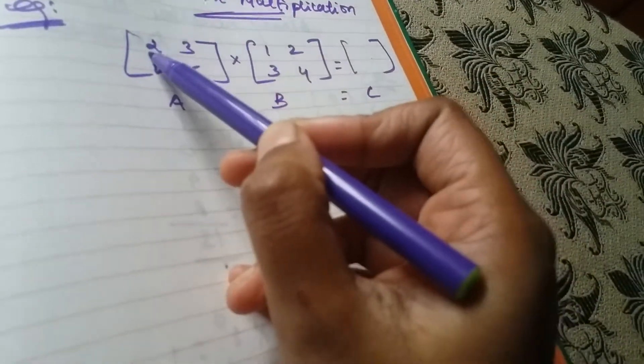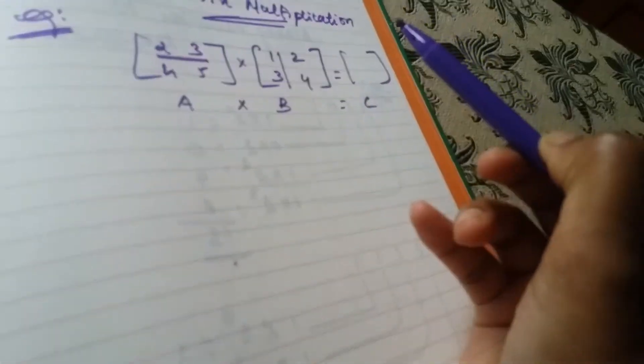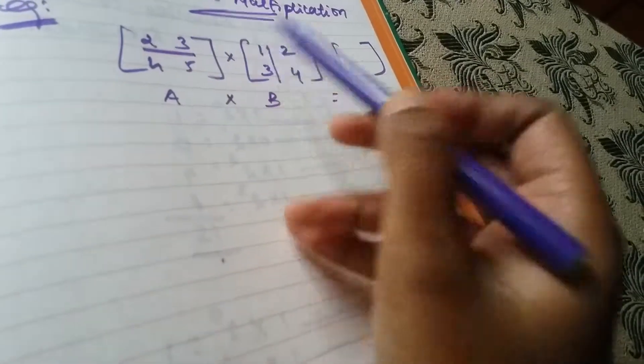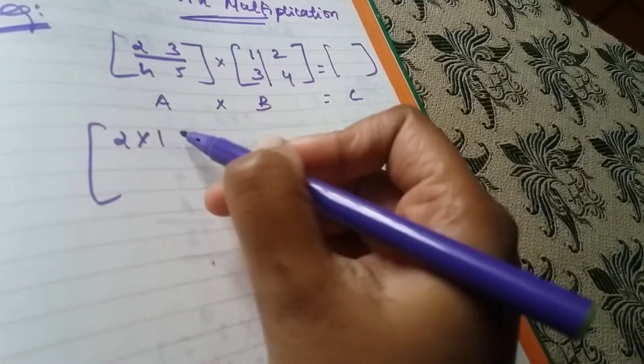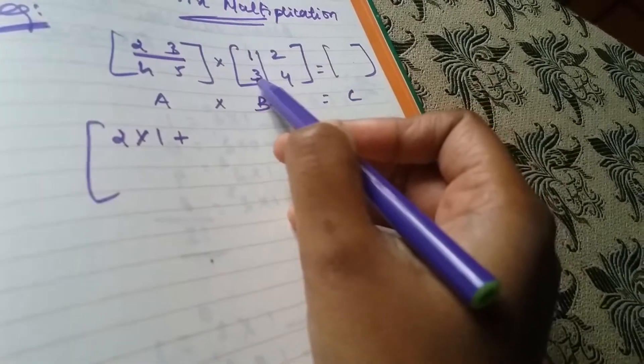First row, column. 2 times 1 plus 3 times 3.